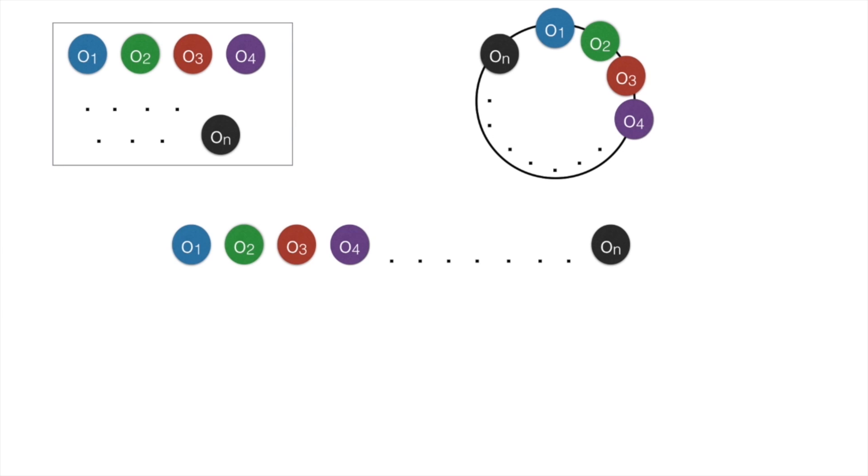Basically, if I were to join o1 and o n together, I would get the same circular permutation as shown above.